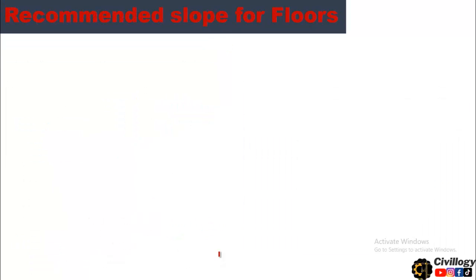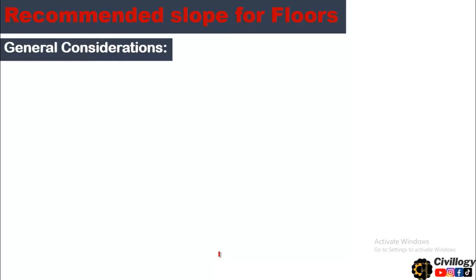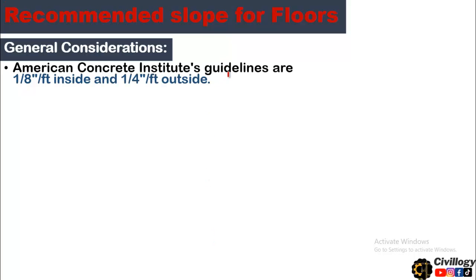Now let's discuss what the recommended slope for floors is. Looking at general conditions first — the American Concrete Institute guidelines specify 1/8 inch per foot for indoor areas and 1/4 inch per foot for outdoor areas. This means that for every 1 foot of travel, you provide a slope of 1/8 inch indoors, and 1/4 inch outdoors.